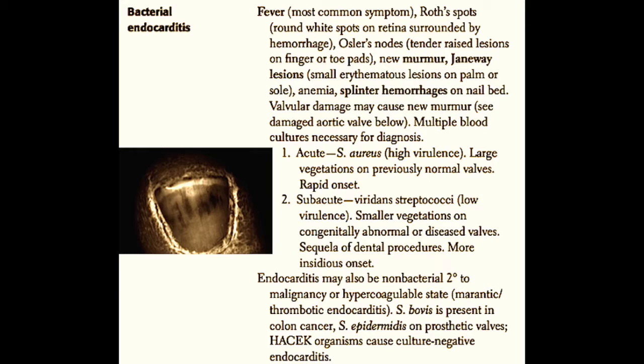The valvular damage may cause a new murmur such as regurgitant flow across the aortic valve, and multiple blood cultures are usually necessary for the diagnosis. These patients often have blood cultures that will not clear after a standard course of antibiotics. Patients with bacterial endocarditis usually have one of two different clinical situations.